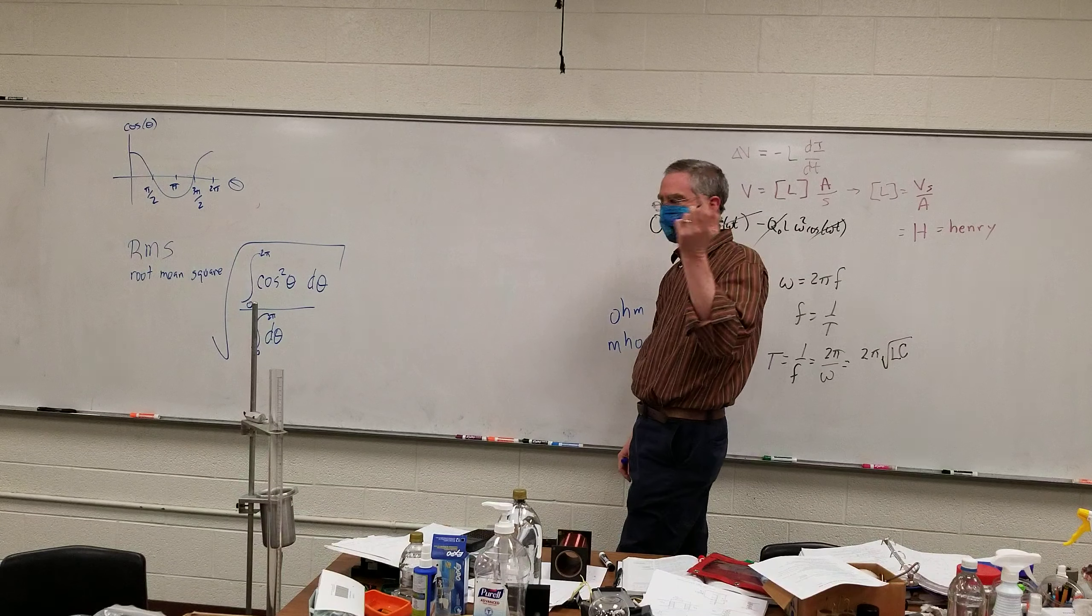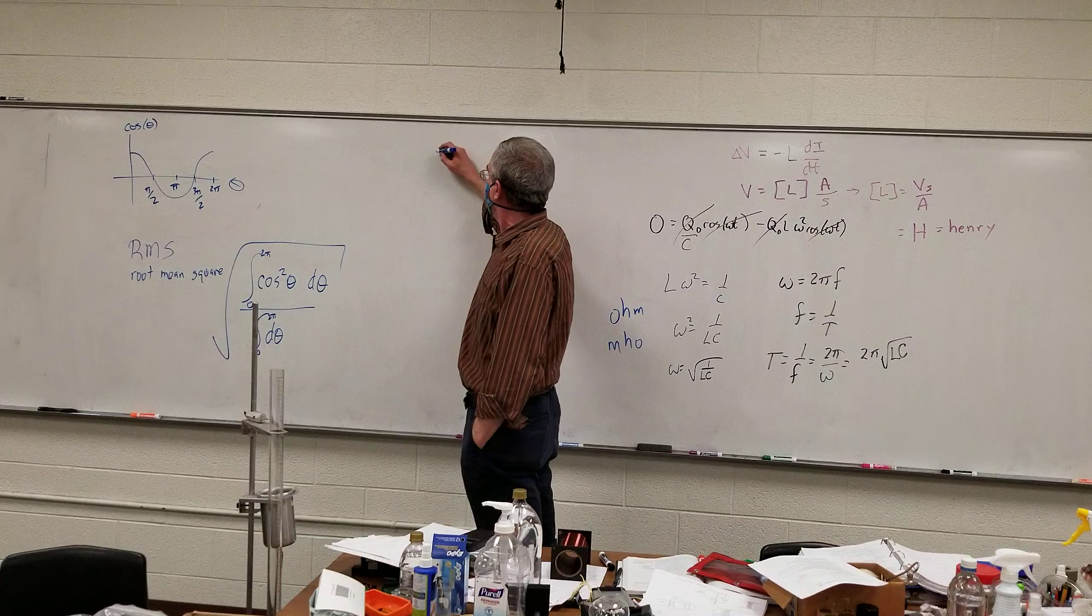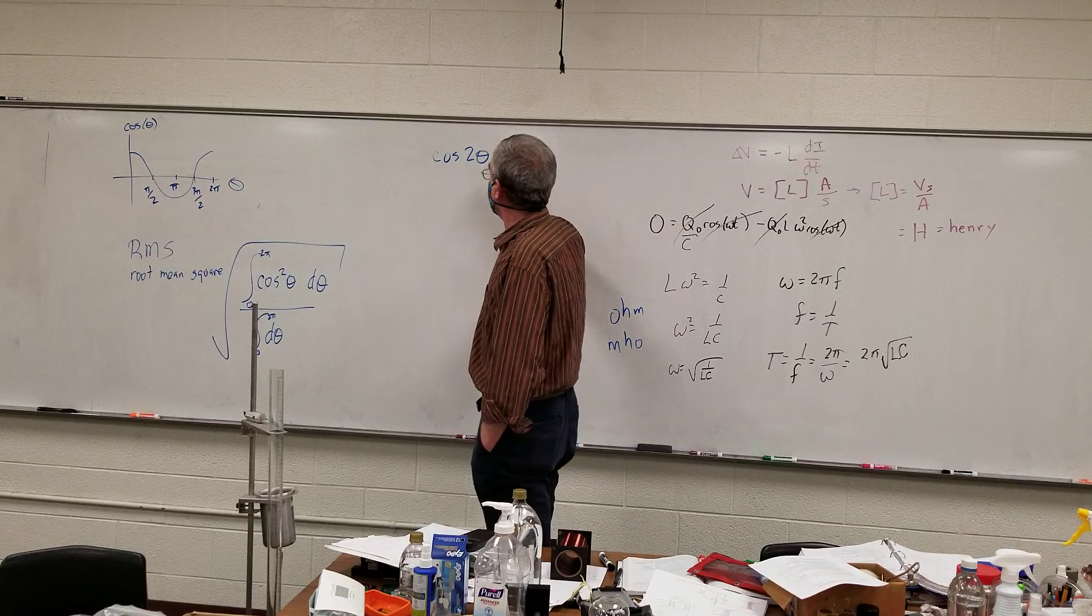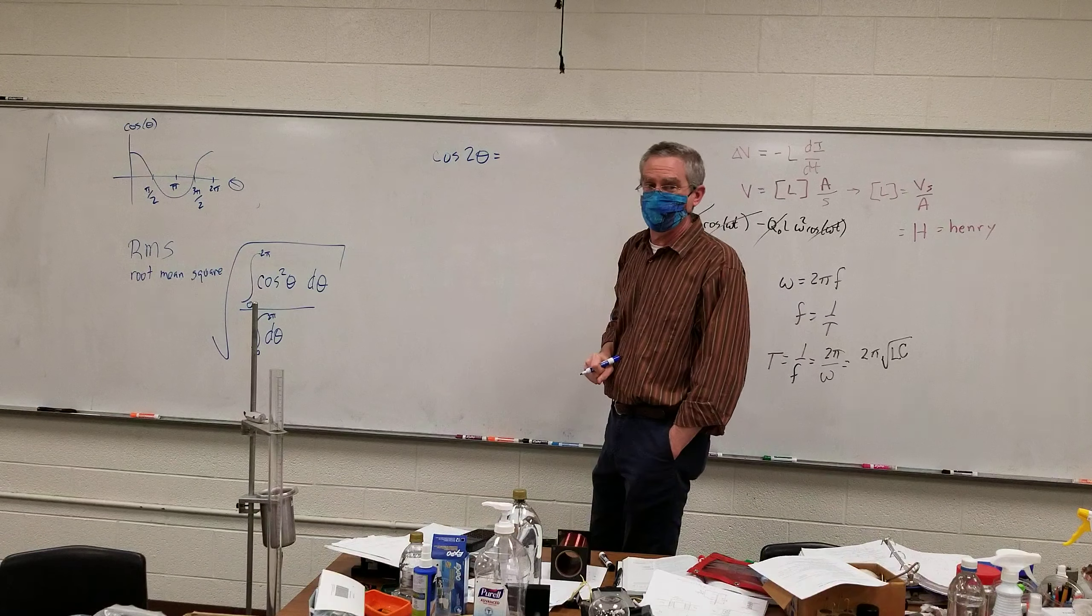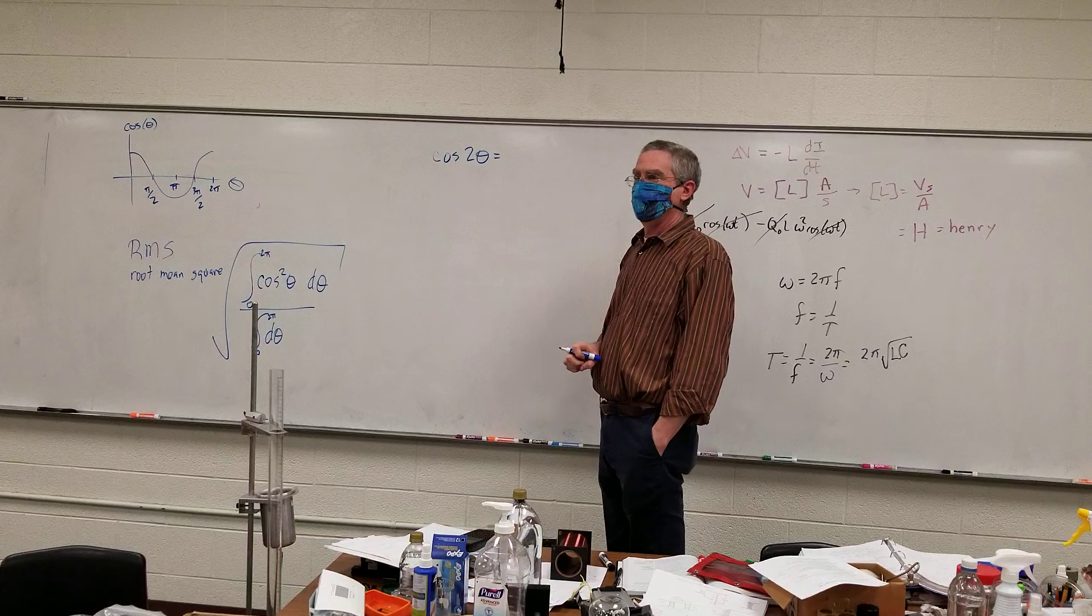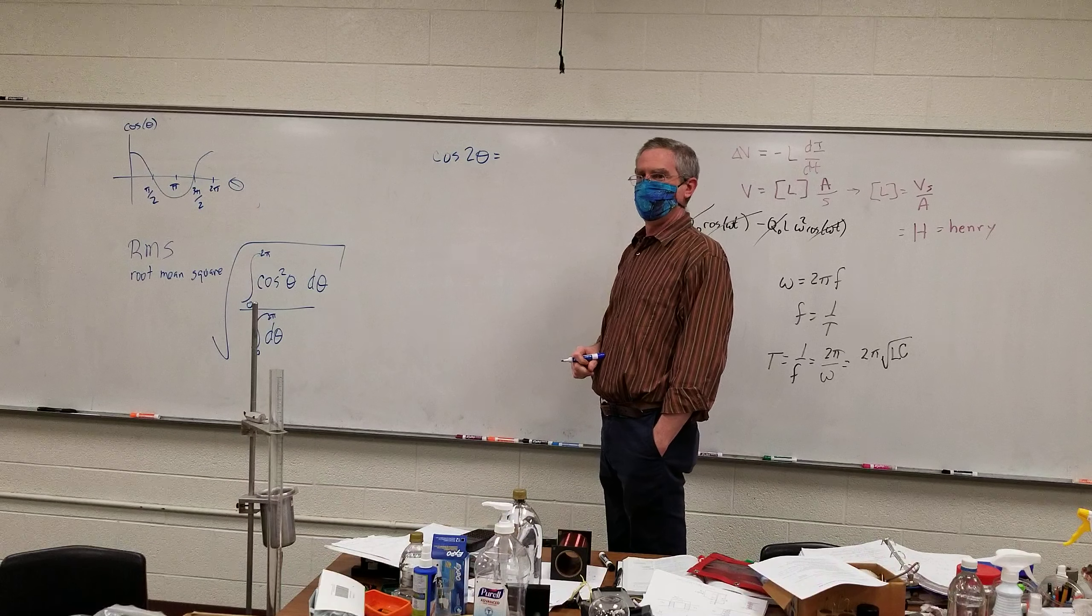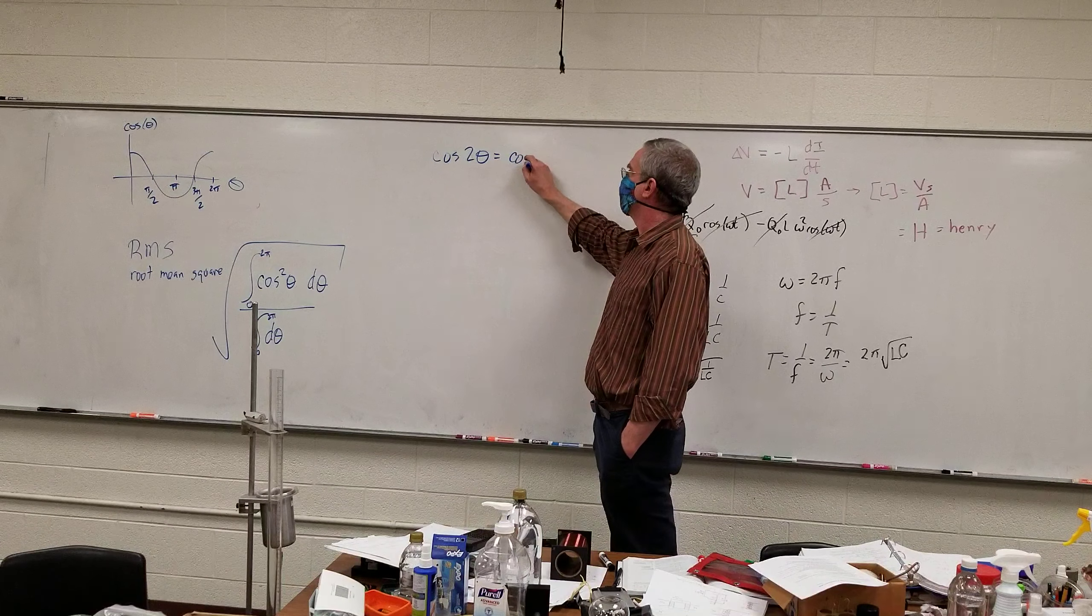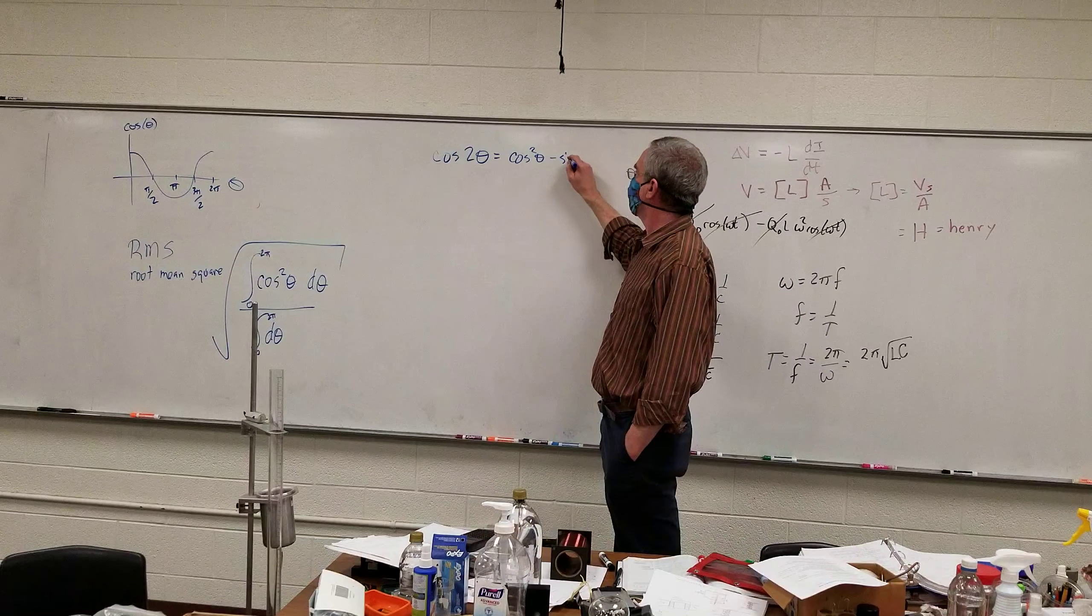Use the half-angle formula? Yeah, you end up using half-angle formula. Oh, or the double-angle formula, actually. Cosine of two theta. Anyone happen to remember that one? I'll give you that one. Cosine squared theta minus sine squared theta.